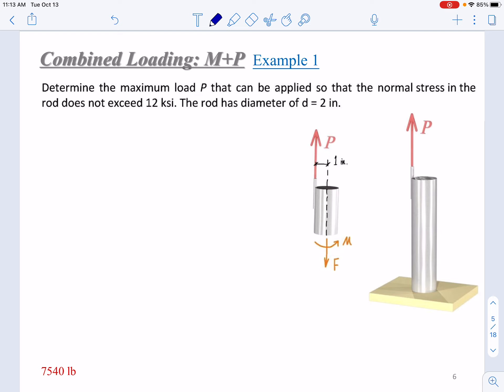So here, this is a design problem. It's not a straightforward step-by-step calculation. It's a design problem to determine the maximum load P. We can do it step-by-step as a normal analysis problem, just carrying P as an unknown. So in the end, we determine the stress and compare it to the 12 ksi. Then we can determine the maximum load. This is the overall strategy.